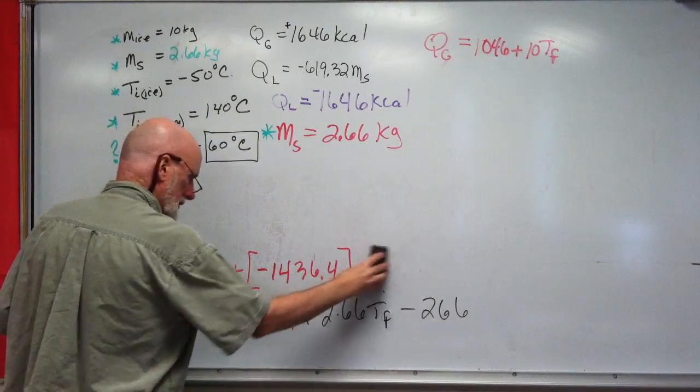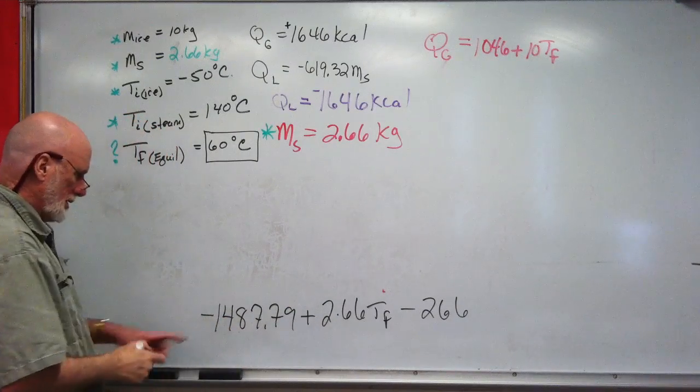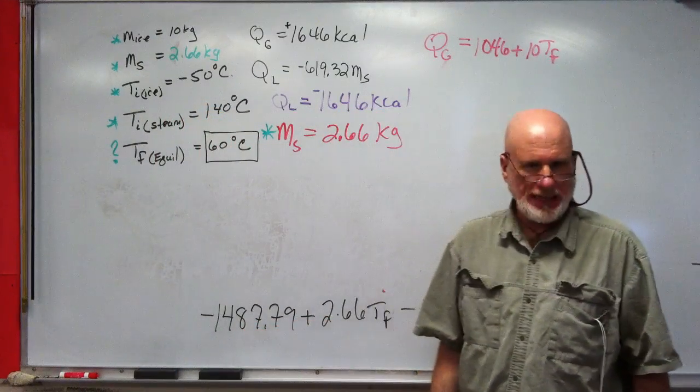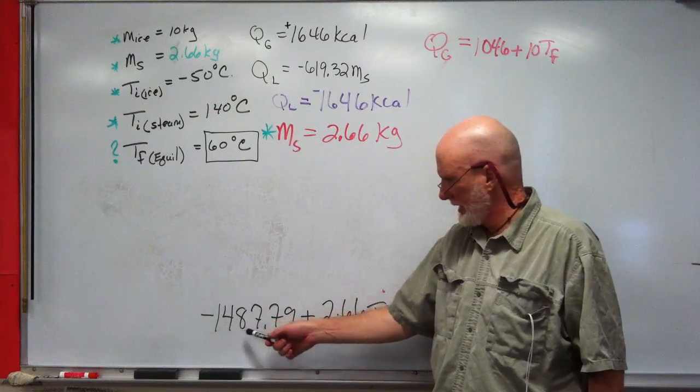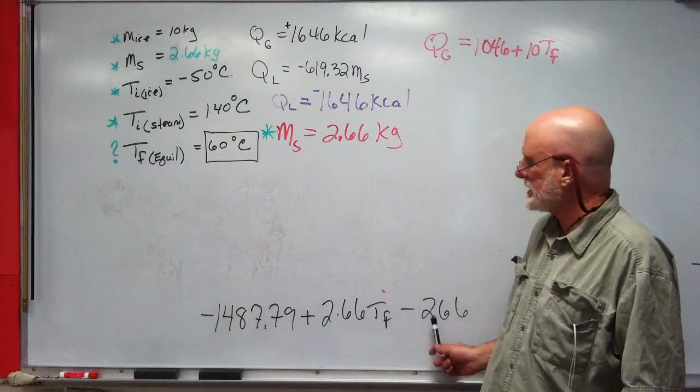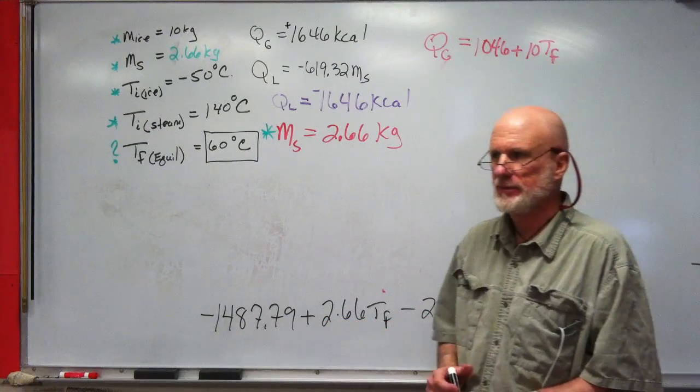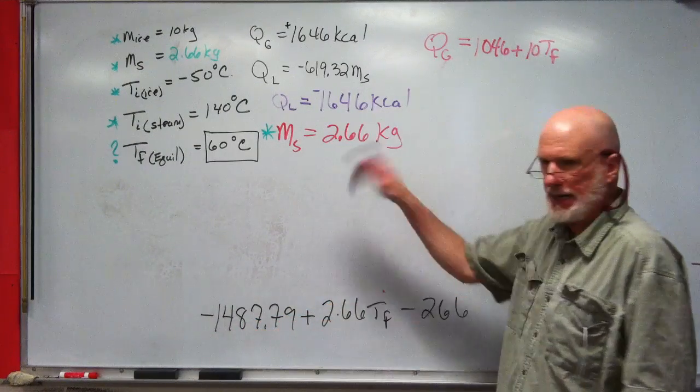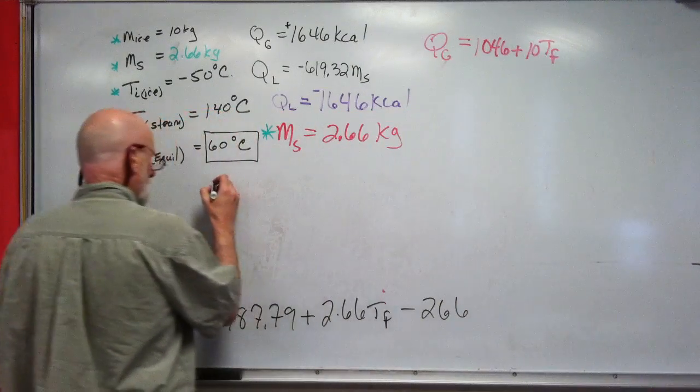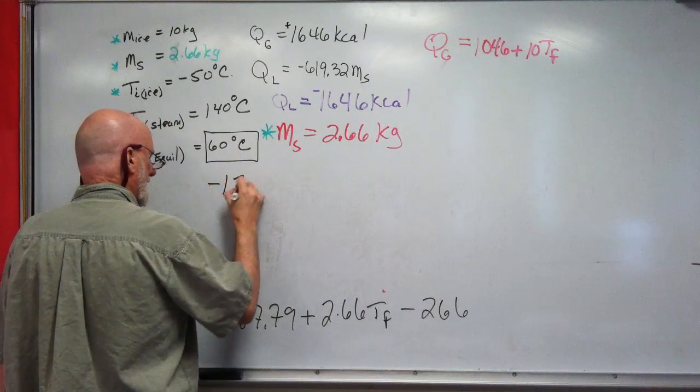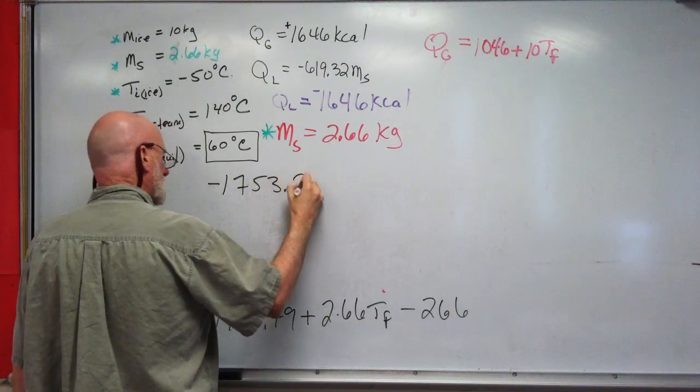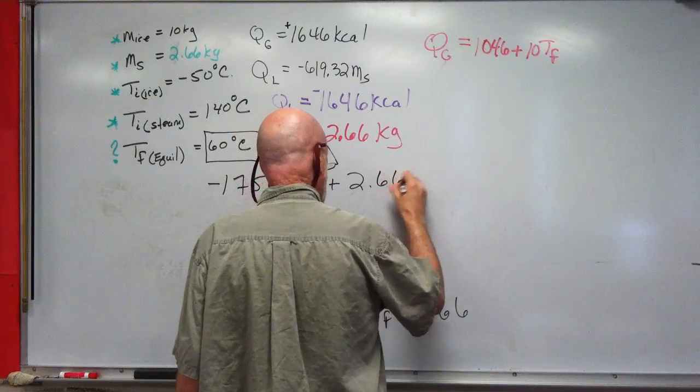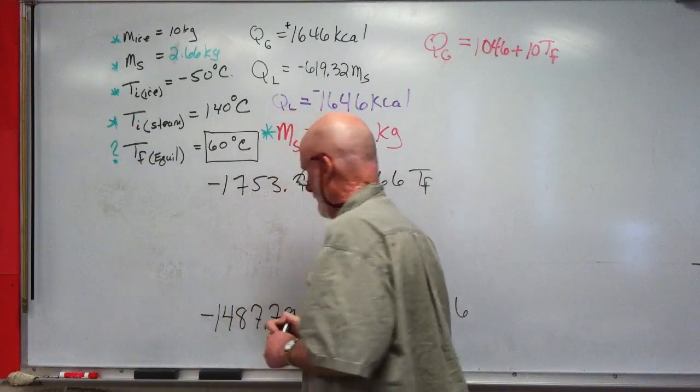So, this—in other words, this plus this with a negative hanging on. What is it? 1753.79. Plus 2.66 TF.